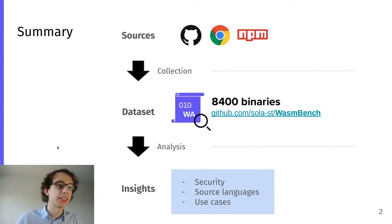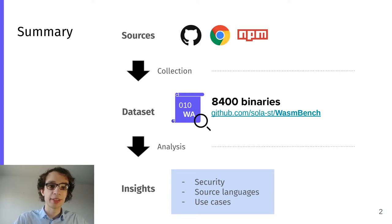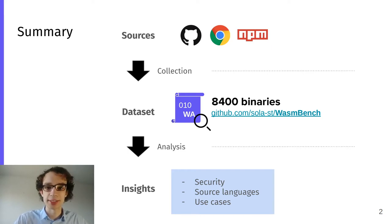Let's first see an overview of what we've done. We collected a lot of WebAssembly binaries from different sources like open-source repositories, the web, package managers, etc. We found more than 8,400 unique binaries which we make publicly available, and we analyze our dataset and generate different insights regarding security, source languages, use cases and more.